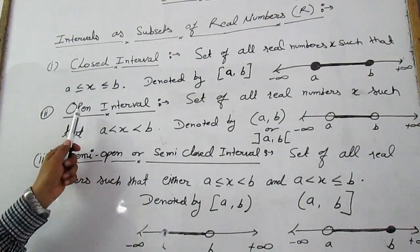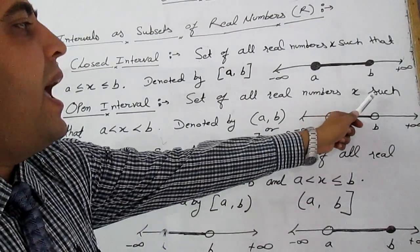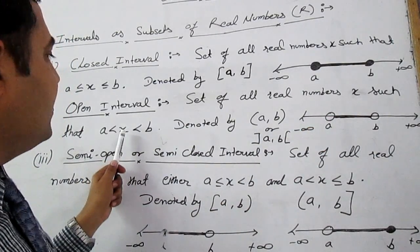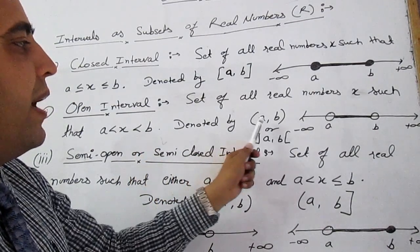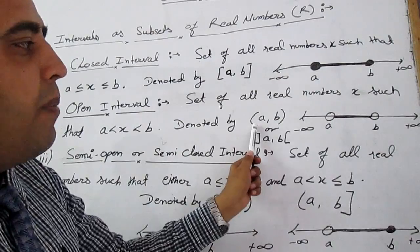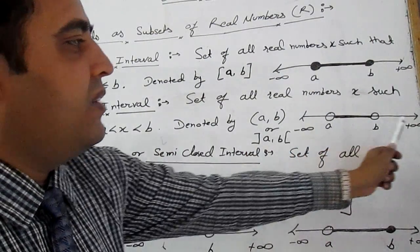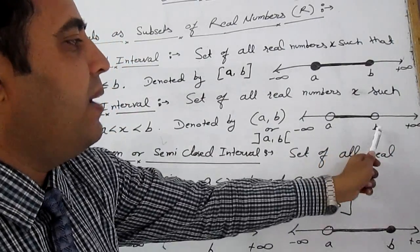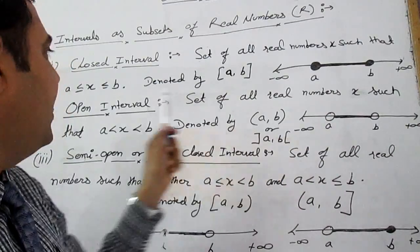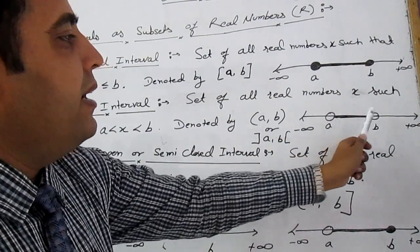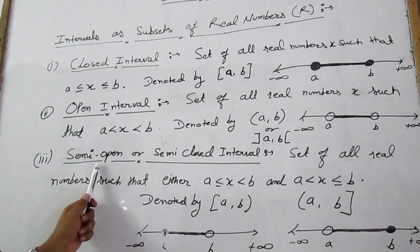The second one is the open interval: the set of all real numbers x such that a is less than x is less than b. It is denoted by (a, b) enclosed within small brackets. On the number line, from minus infinity to plus infinity, all elements between a and b are included, but a and b themselves are not included.